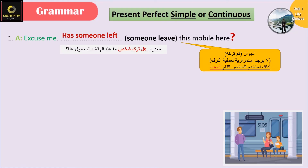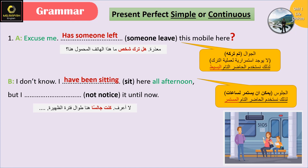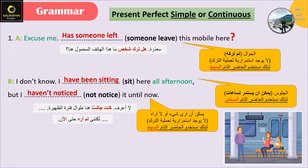Has someone left this mobile here? أنا عم أسأل هل ترك شخص موبايله هون، فرح أقول هل تركه وليس هل عم يترك، طبعا لا في استمرارية بالترك. I don't know. I have been sitting here all afternoon - في استمرارية، أنا صر لي أقعد هون كل فترة الظهر. But I haven't noticed it until now - أنا ما لاحظته، إما بلاحظ أو ما بلاحظ، ما في استمرارية. ترجمة الجملة هون بتساعدكم تعرفوا إذا كان الحدث صار أو إذا كان في استمرارية.